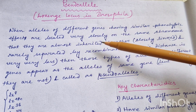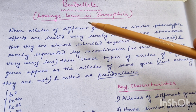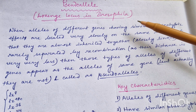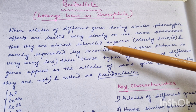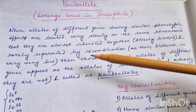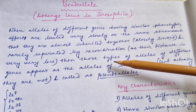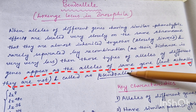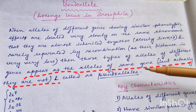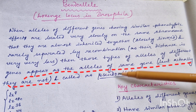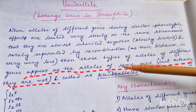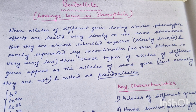In this condition, when the alleles of two different genes with similar phenotypic effect are very closely located on the same chromosome and have a very less recombination frequency, they are confused as the allele of a single gene. But actually they are not, because they are the alleles of different genes. That is why they are known as pseudoalleles.